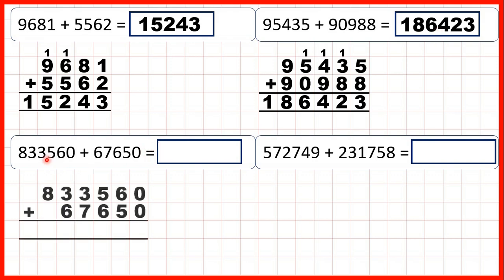Now we have 833,560 plus 67,650. Because we're adding whole numbers, we need to make sure that the numbers are written out with the digits lined up on the right-hand side, because then the place values — our 1s, 10s, 100s, 1,000s, 10,000s, and 100,000s — will be lined up as well.